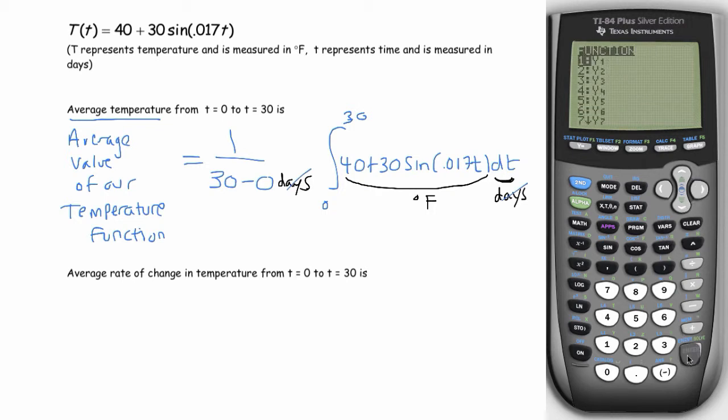I'm going to hit the vars button, Y variable. I'm going to use Y1 since that's where I wrote my function. I'm going to evaluate the expression with respect to x on the interval 0 to 30. And when you do that, you get 1424.